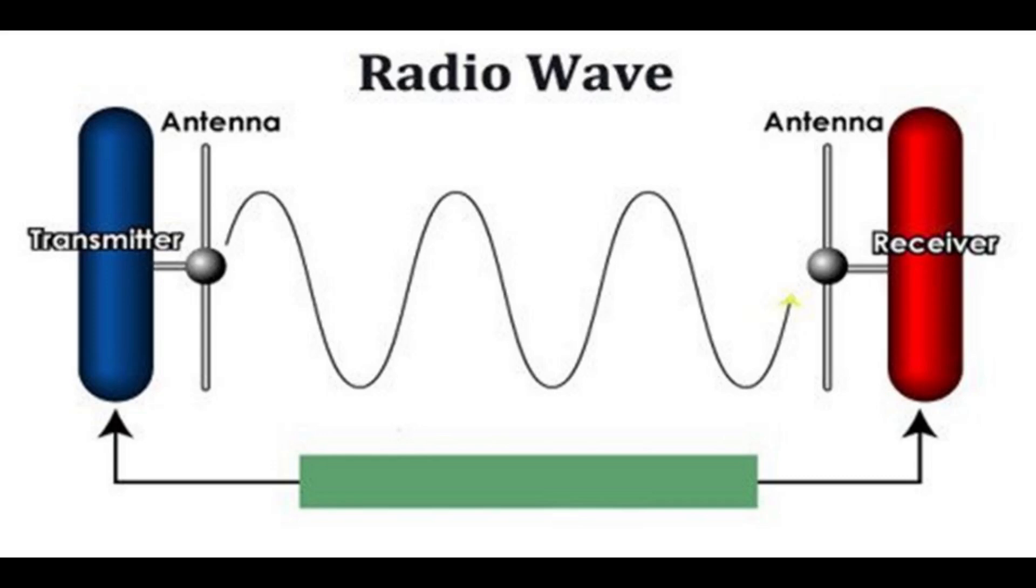In the transmitter, an electronic oscillator generates an alternating current oscillating at a radio frequency, called the carrier wave because it creates the radio waves that carry the information through the air. The information signal is used to modulate the carrier, altering some aspect of it, encoding the information on the carrier. The modulated carrier is amplified and applied to an antenna.